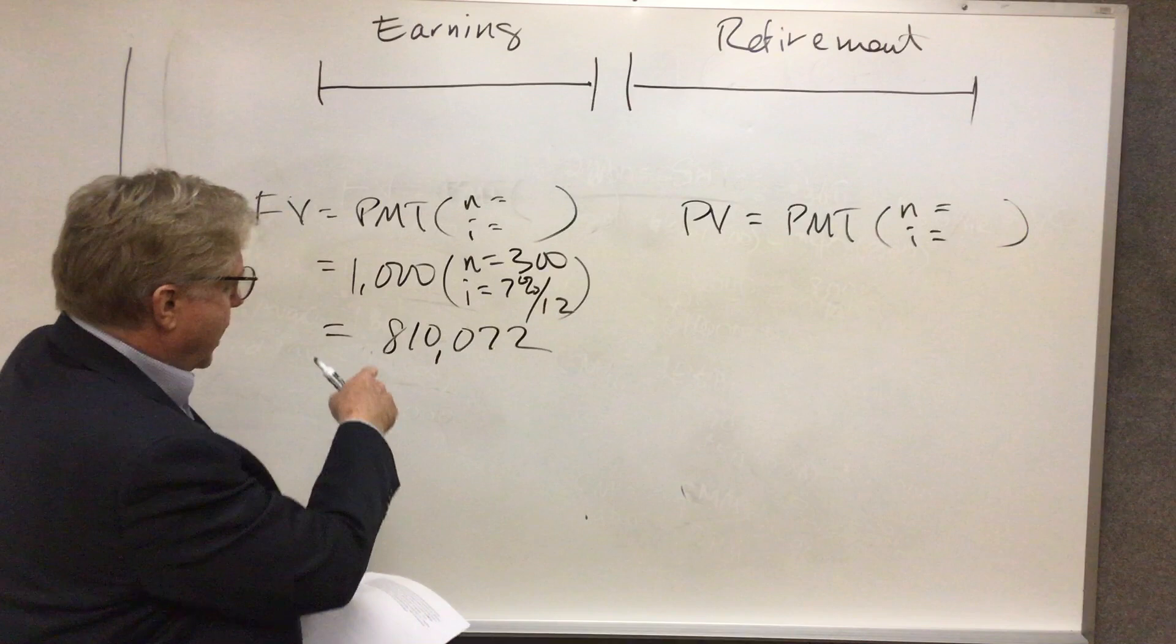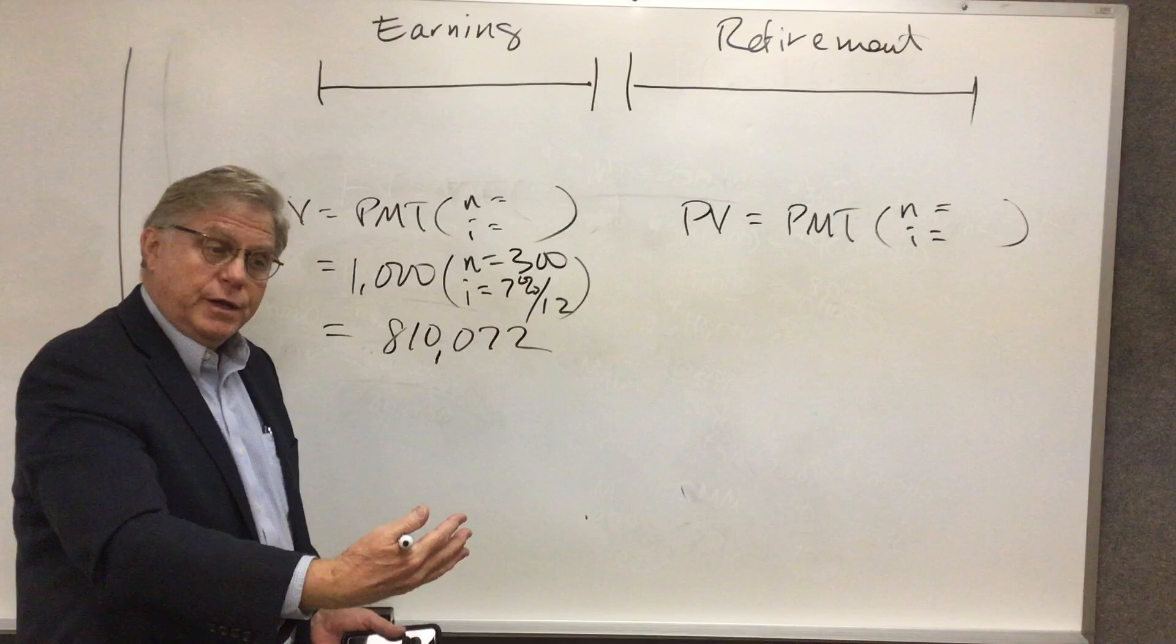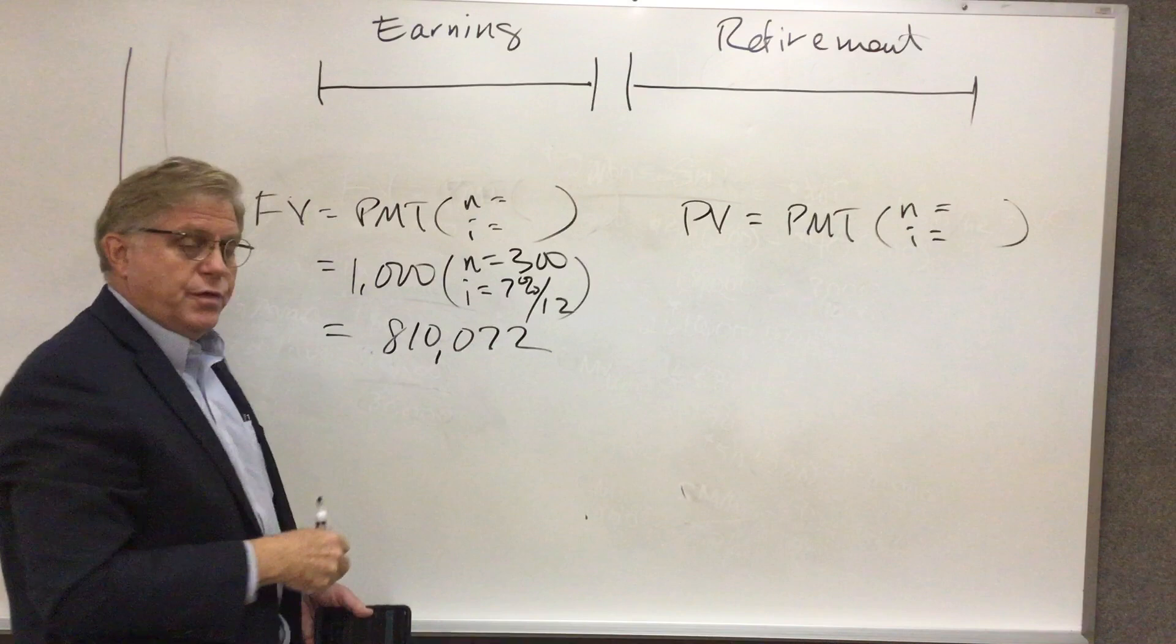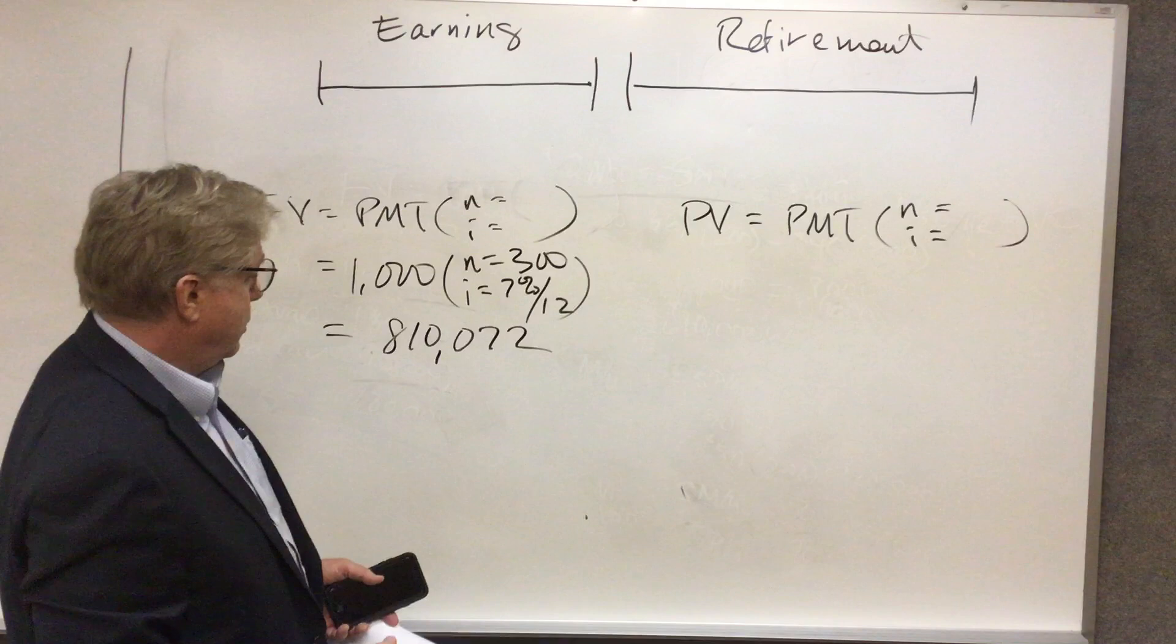Now, by the way, we could realize right off the bat that of this $810,000, a little over $500,000 was earned on that account during the earning years, because she's contributed 300 payments of $1,000. $300,000 of that money was put in by her, and so the other $510,072 was actually earned on the account during her earning years.